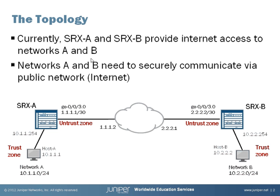We will consider the following topology with two SRX devices, SRX-A and SRX-B. Both devices have an interface GE003 connected to the Internet. The addressing on SRX-A is 1.1.1.1 and on SRX-B is 2.2.2.2. Each SRX also has a protected network behind it — Network A and Network B — with addressing 10.1.1.0/24 and 10.2.2.0/24 respectively.